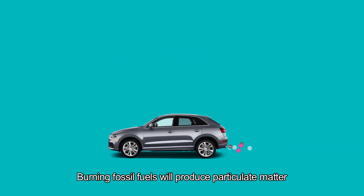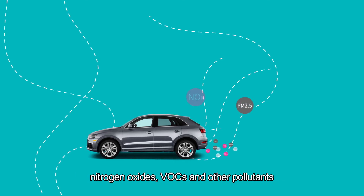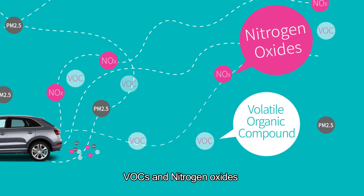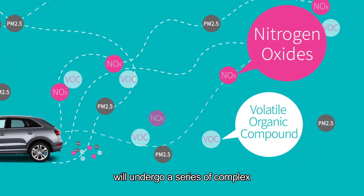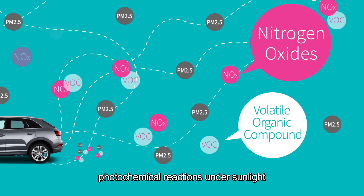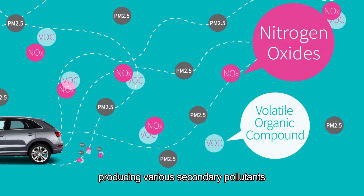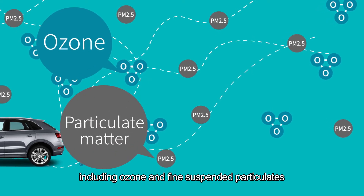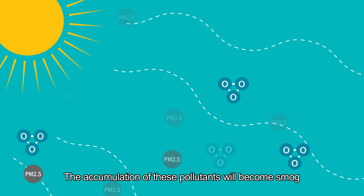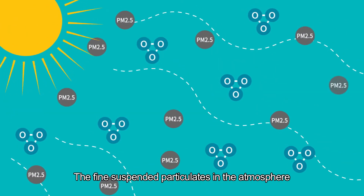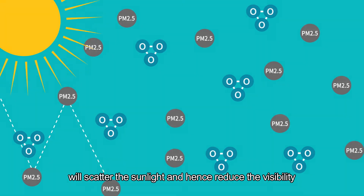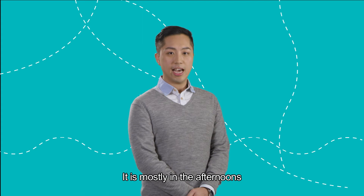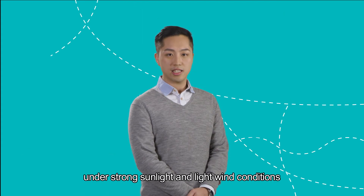Burning fossil fuels will produce particulate matter, nitrogen oxides, VOCs and other pollutants. VOCs and nitrogen oxides will undergo a series of complex photochemical reactions under sunlight, producing various secondary pollutants, including ozone and fine suspended particulates. The accumulation of these pollutants will form smog. The fine suspended particulates in the atmosphere scatter sunlight and reduce visibility. This occurs mostly in the afternoons under strong sunlight and after night rain conditions.